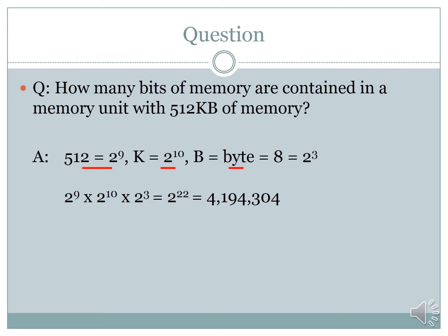For example, how many bits of memory are contained in a memory unit with 512 kilobytes? When you look at 512 in binary it's 2 to the power 9. Kilo in base 2 is 2 to the power 10, and a byte is 2 to the power 3 bits — that is, 8 bits. So the total memory in 512 kilobytes in terms of bits is 2⁹ × 2¹⁰ × 2³ = 2²² = 4,194,304 bits.